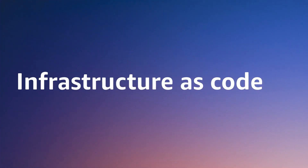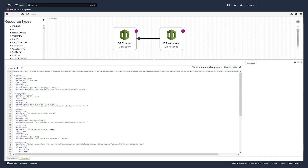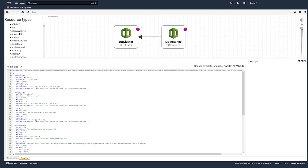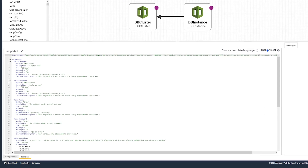One such benefit is the ability to use Infrastructure as Code. Infrastructure as Code allows your organization to apply the same rigor of application development to infrastructure. Rather than relying on manually performed steps, which is time-consuming and error-prone, you can deploy your compute, storage, network, and application services using configuration files.